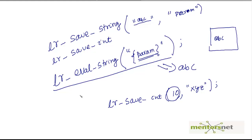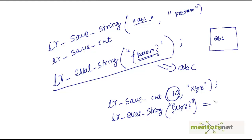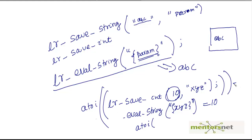However, there is nothing called lr_eval_int. You get the value of the integer parameter using lr_eval_string. If you give lr_eval_string with xyg in the curly braces, you get a string representation of that integer. If you want to add 1 to this value, there is a C function called a2i. If you give a string that represents an integer, a2i will return the integer value. So a2i of the lr_eval_string result, plus 1, gives you 11. This is how you do arithmetic operations on parameters.